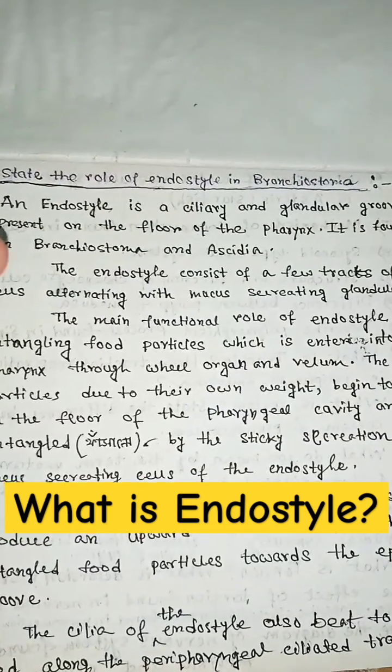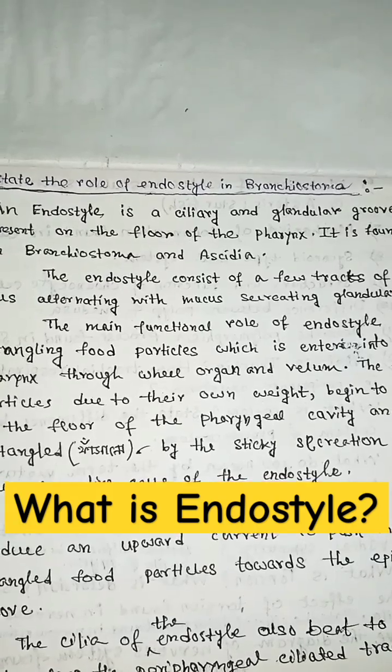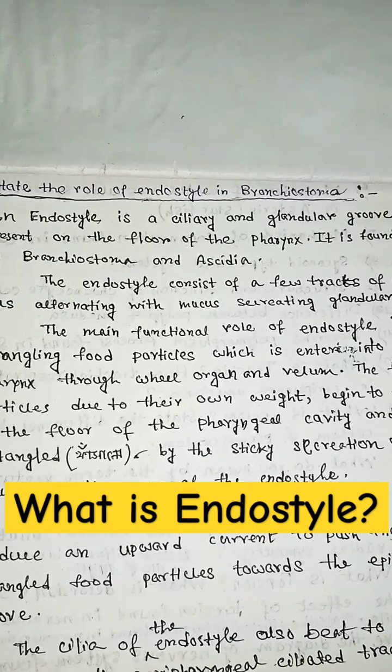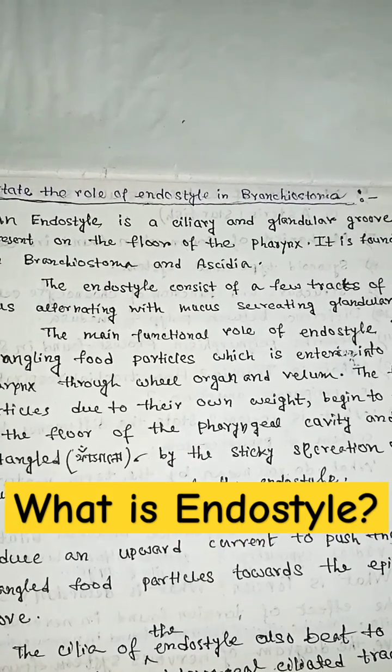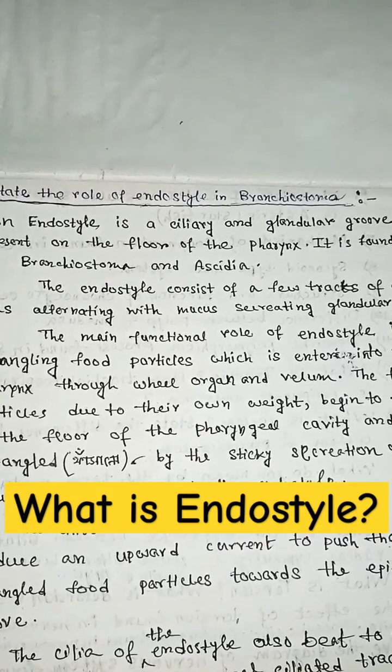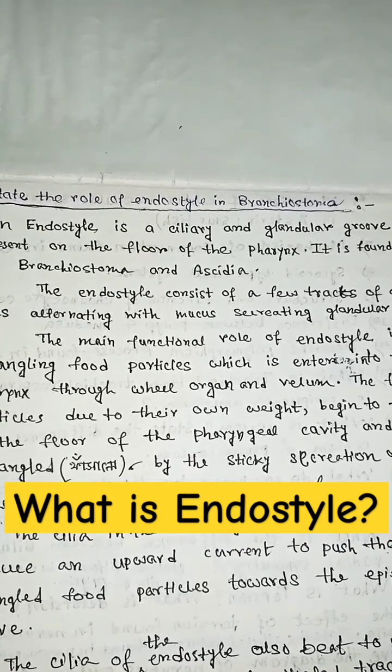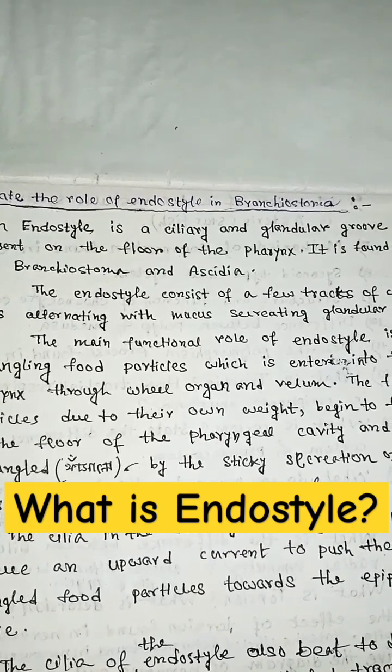The secretion of glandular cells of the endostyle transforms the boluses of foot particles into a cord-like structure known as food cord.